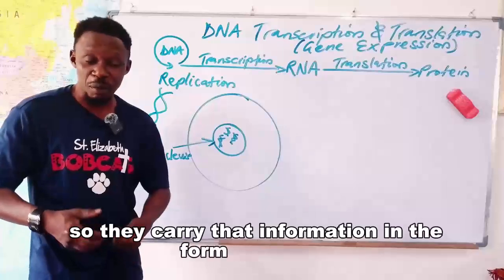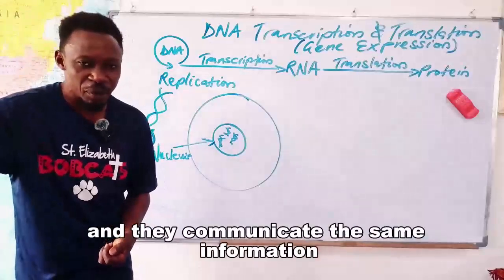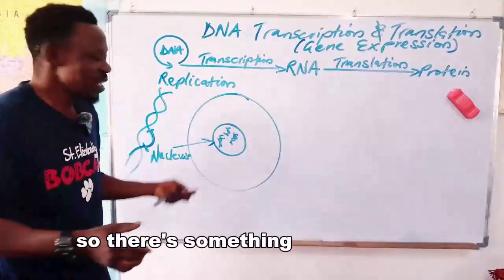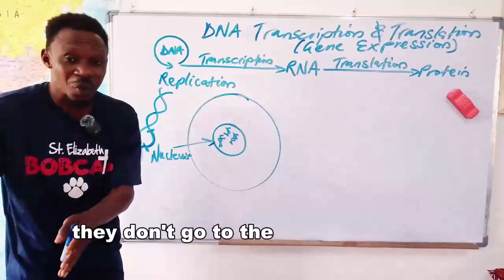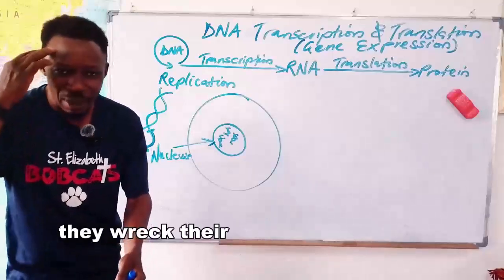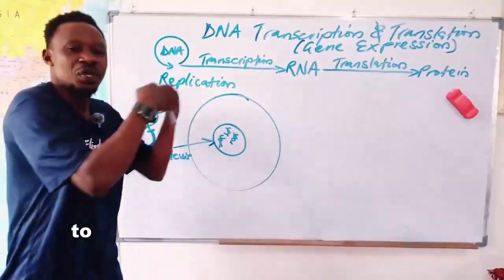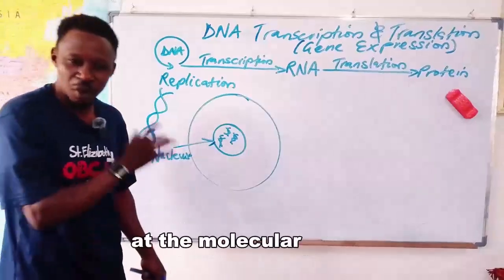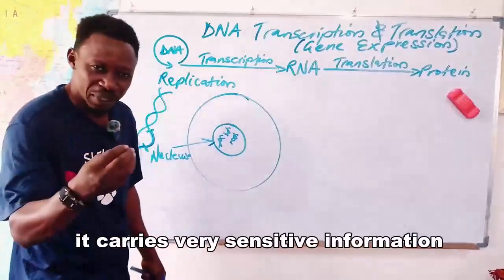For his ideas to make sense and be carried out in the society, there have to be some go-betweens — some messengers, some trusted allies — who make contact with him, get the information, carry it in the form of a code or strategy, go out, and communicate that information to the people who execute the job.